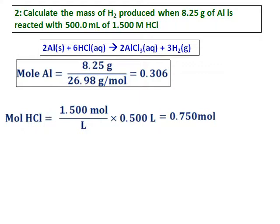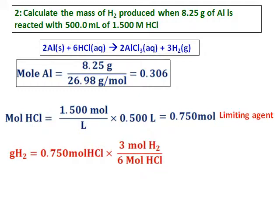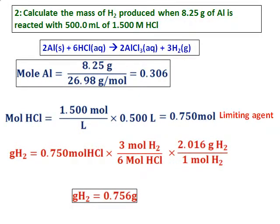From the equation, you can see that for every 2 moles of aluminum, I need 6 moles of HCl, or in other words, I need 3 times the HCl. 3 times the moles of aluminum means I should have had around 0.9 moles of HCl. But I have only 0.75 and hence, HCl is the limiting agent. Once you get the limiting agent, use the limiting agent and the equation to calculate the grams of hydrogen.